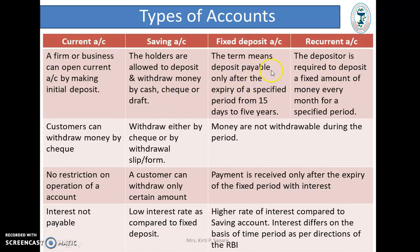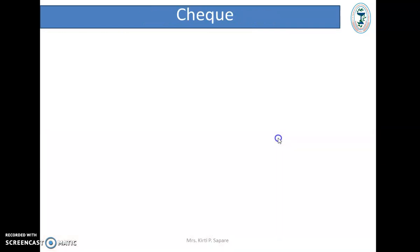In a Fixed Deposit Account, you deposit a certain amount for a period ranging from 15 days to 5 years. In a Recurrent Deposit Account, you deposit a fixed amount every month for a specified period. So these are the four types of accounts.